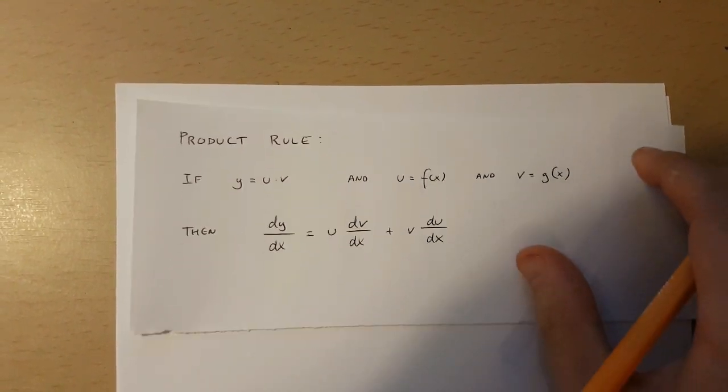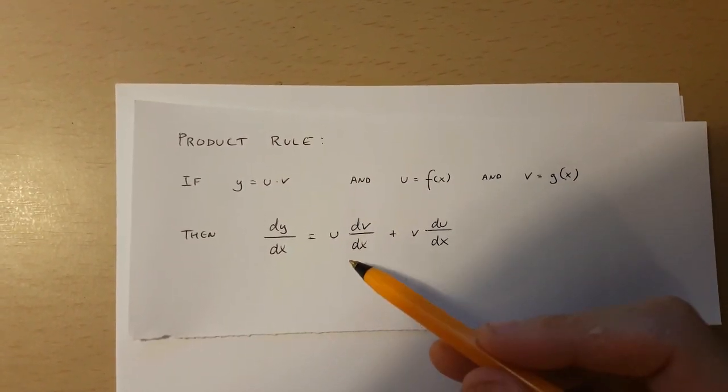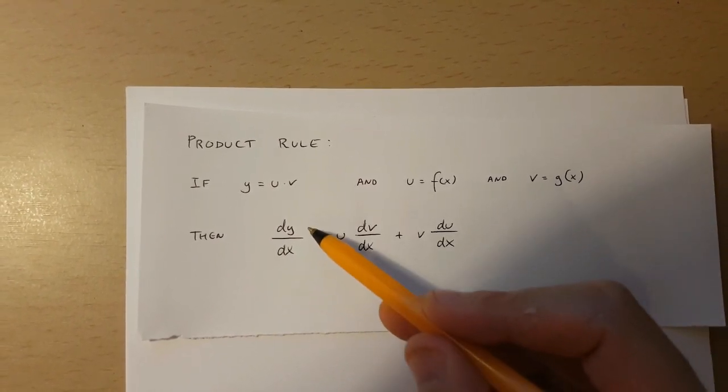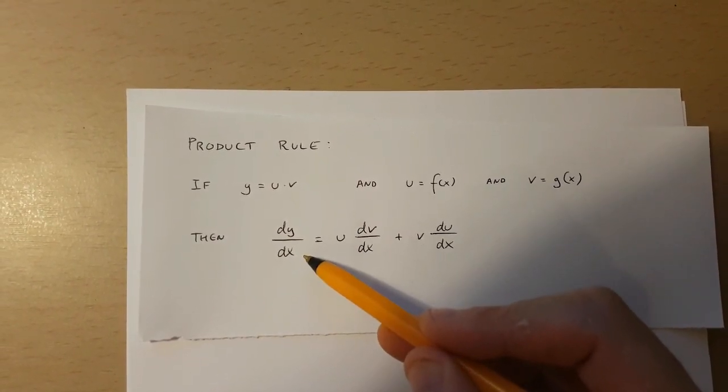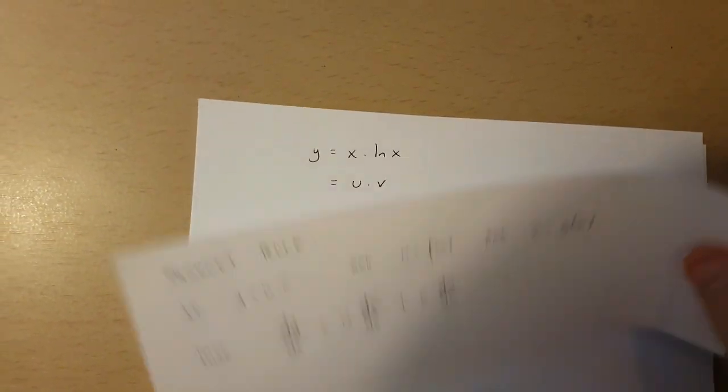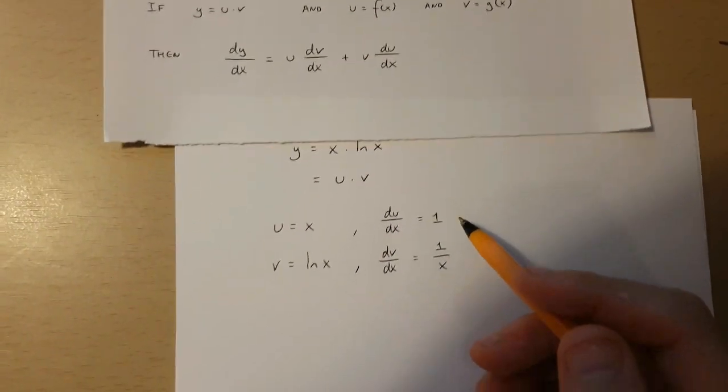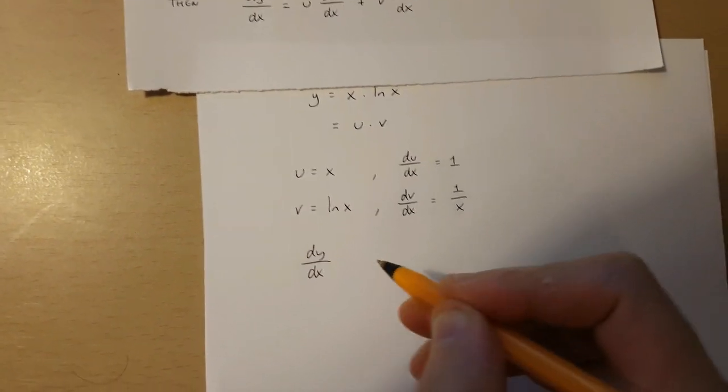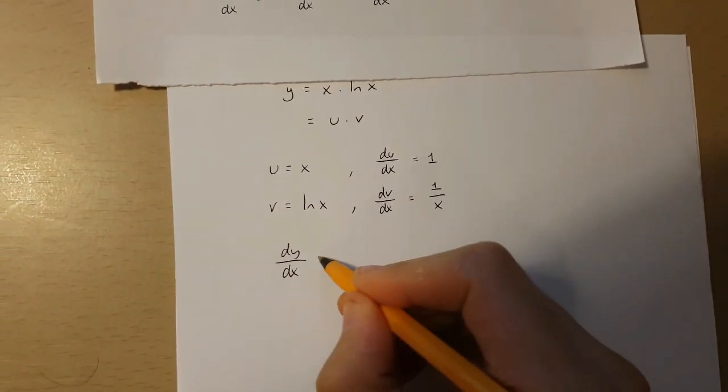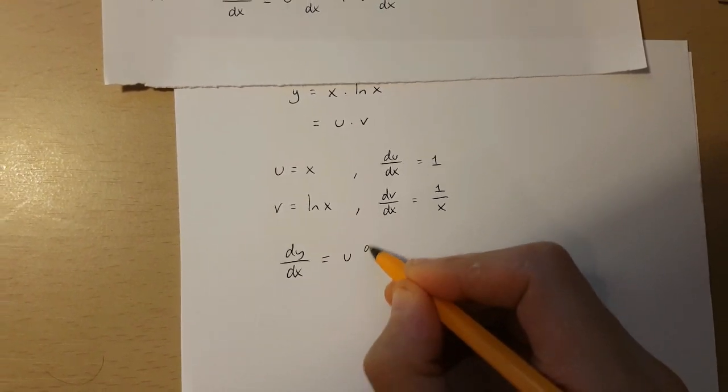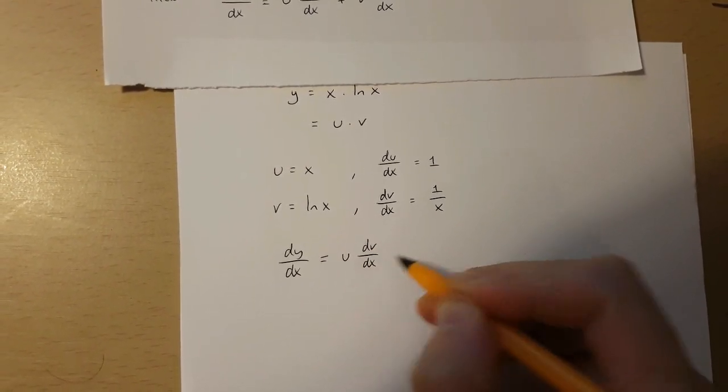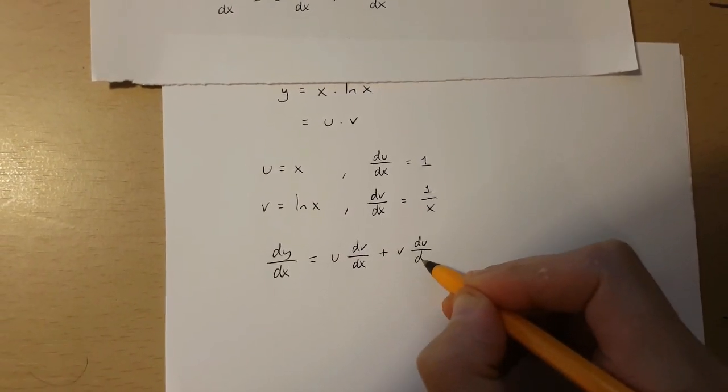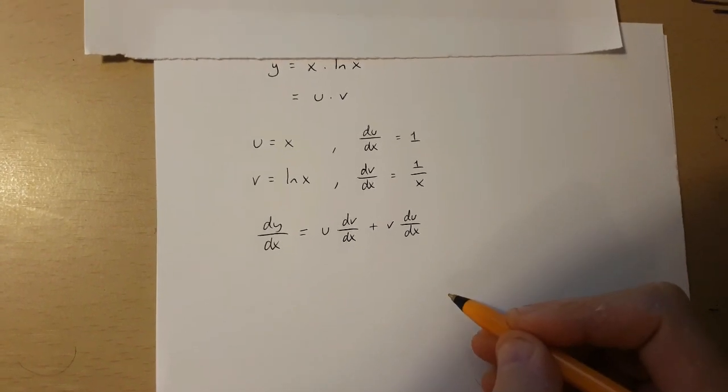Now, since I've got every element of this product rule, I can now discover what dy over dx is. Now, dy over dx is going to be equal to u times dv over dx plus v times du over dx.